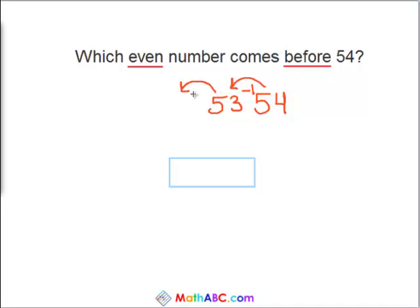So we need to go back again. Subtract another one, and then we have 52. And as you can see, 52 ends in a 2, so we know it's definitely divisible by 2, and therefore an even number. So 52 is the next even number that comes before 54.